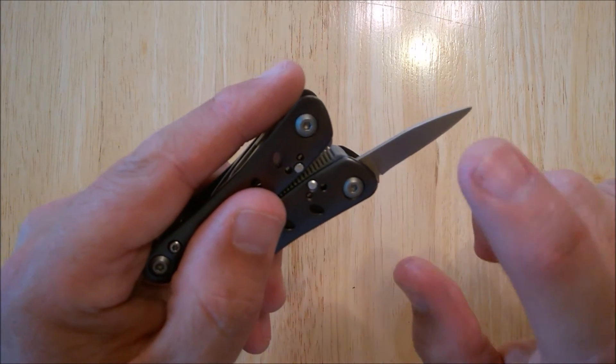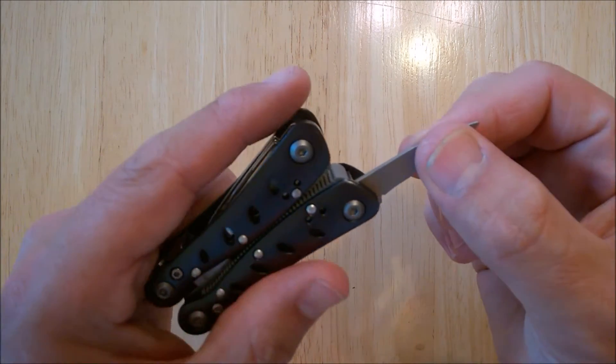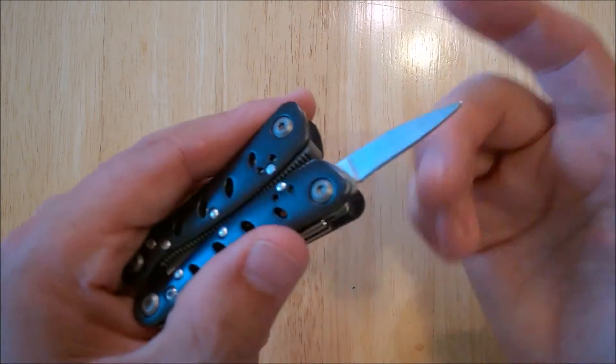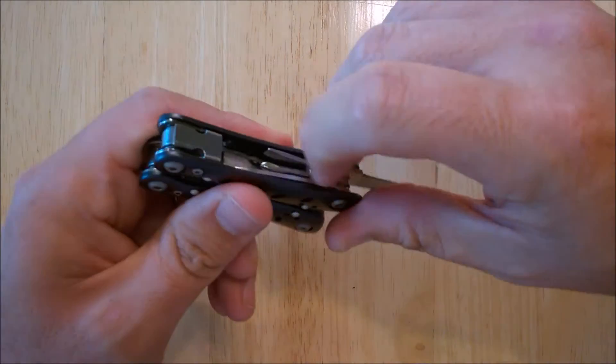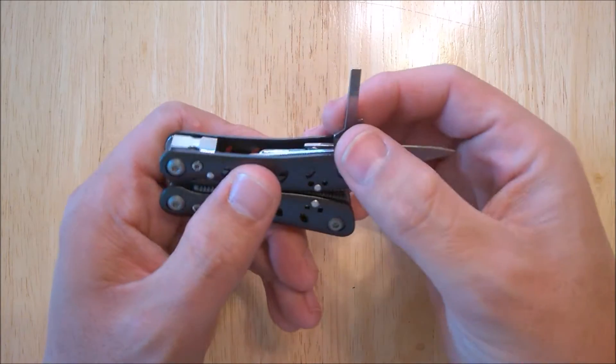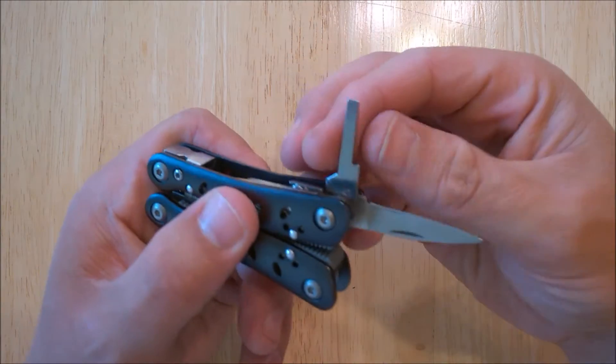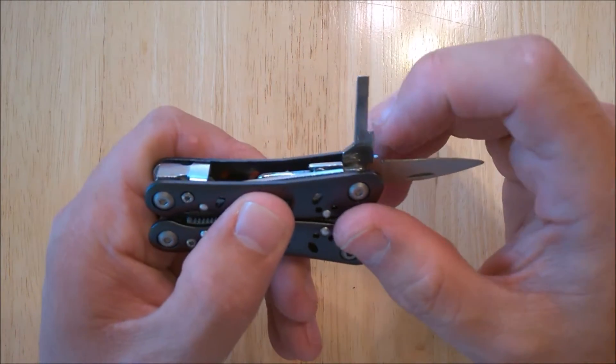She did say that this is 440c steel. So just like the other Ganzo tools, knives, 440c. So you've got the fine blade, you've got a small flat driver, you could also use that as a prying tool.